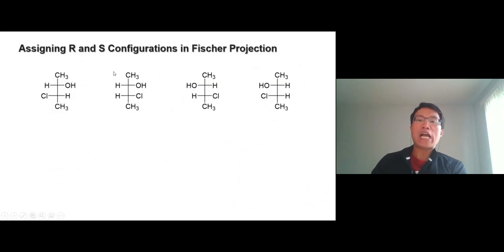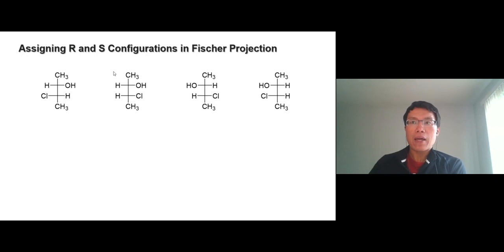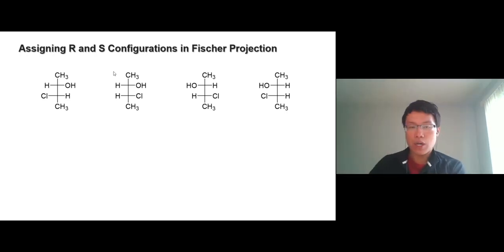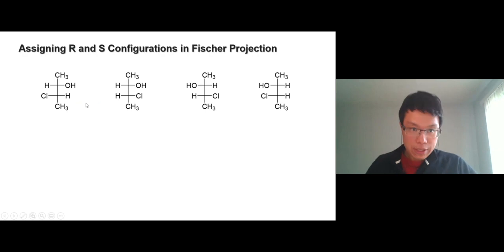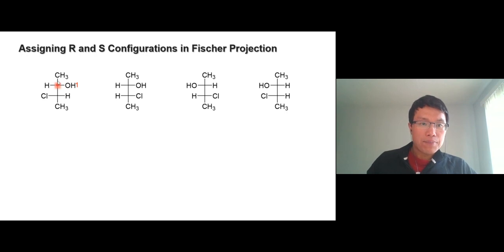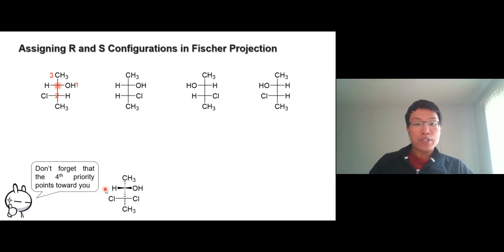Fischer projection is very convenient for determining the stereo relationship of compounds with multiple chiral centers. For example, here we have stereo isomers, each with two chiral centers. To determine R/S: oxygen is number one; both are carbons, but the carbon connected to chlorine is number two; carbon with all hydrogens is number three; and hydrogen is number four. Don't forget that on Fischer projection the horizontal line points toward you, so you have to flip — one, two, three looks like R, flip it to S.